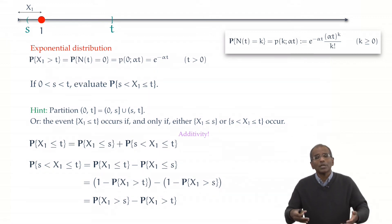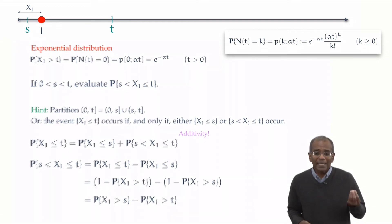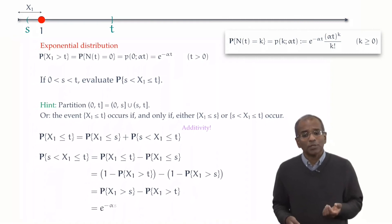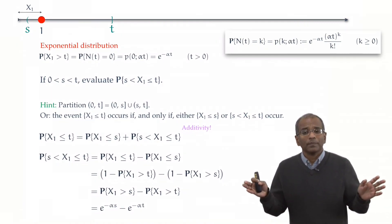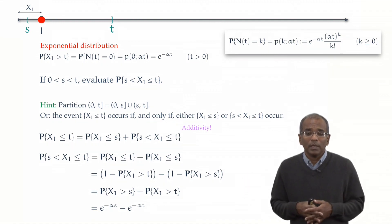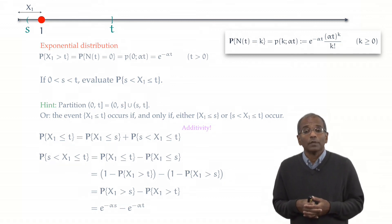And now we simply read out the exponential forms. The first of the probabilities on the right is of the form e to the minus alpha s. The second of the probabilities on the right is of the form e to the power of minus alpha t. And there we have it. Simple and elementary. The listener might want to play with this formulation to see how other relevant probabilities involving the first arrival come out.